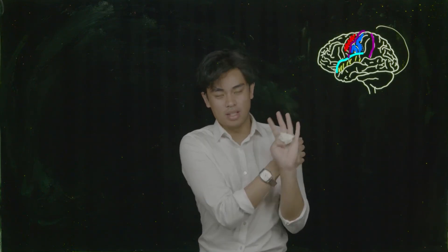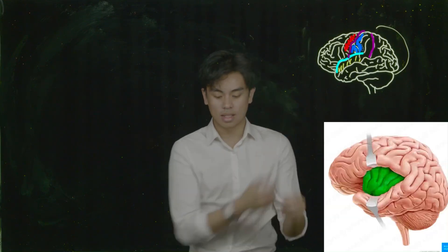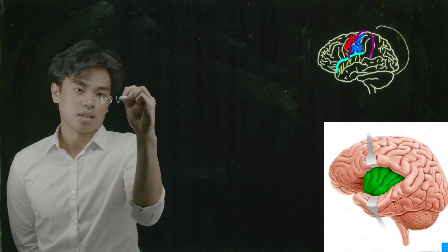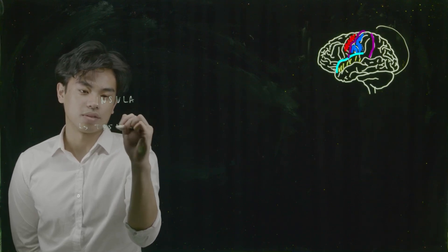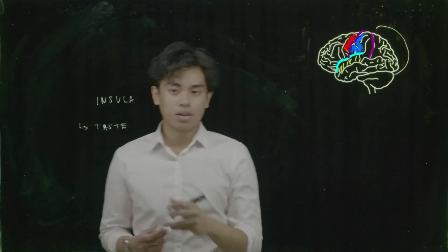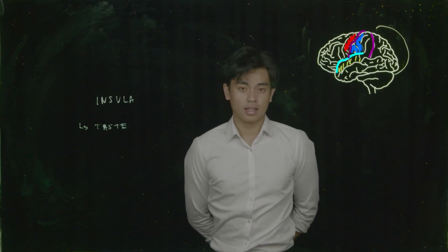You might be wondering why we scrunched up two pieces of paper — that is because they represent the hidden lobe, the insula. If we open our brain at the lateral sulcus, we can see the insula. The insula contains the gustatory cortex, responsible for our sense of taste. Gustatory derives from the Latin word gustere, meaning to taste. That is what the insula — our hidden lobe — is responsible for.